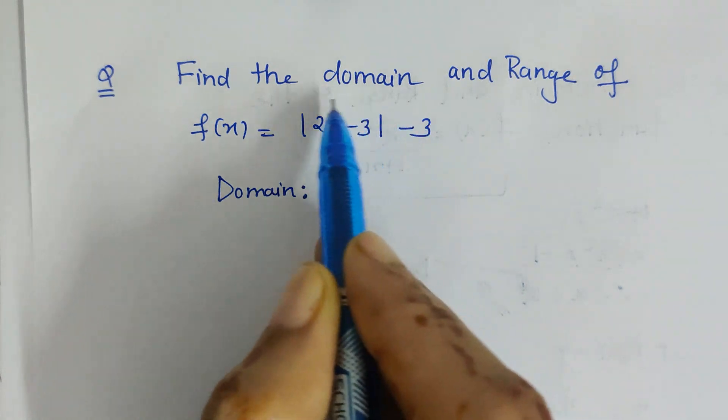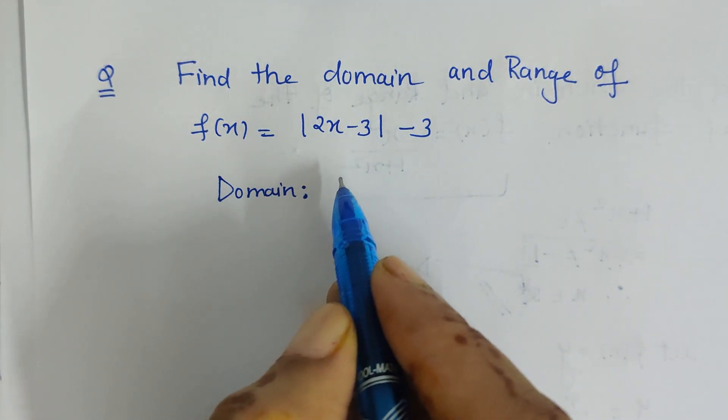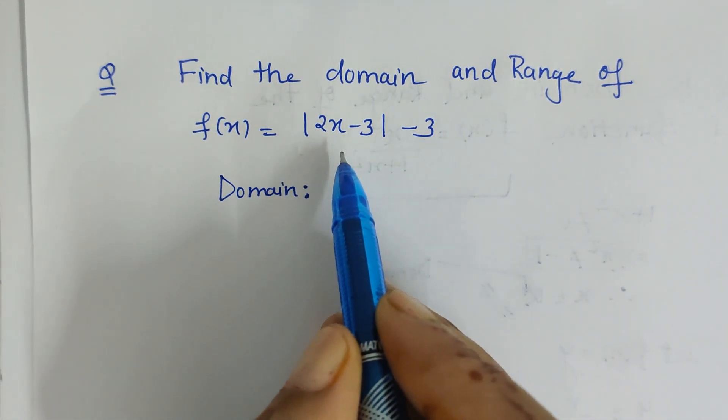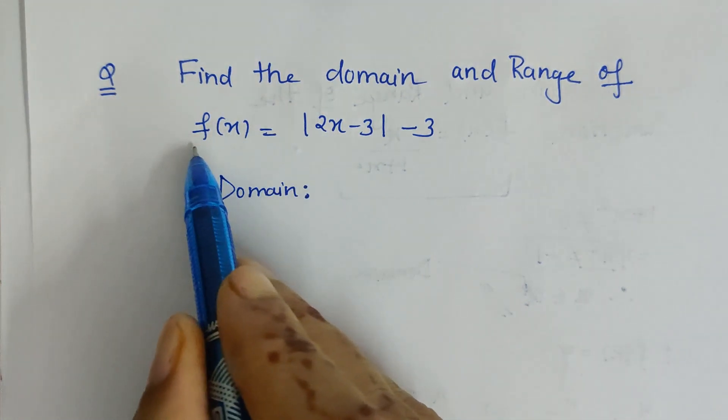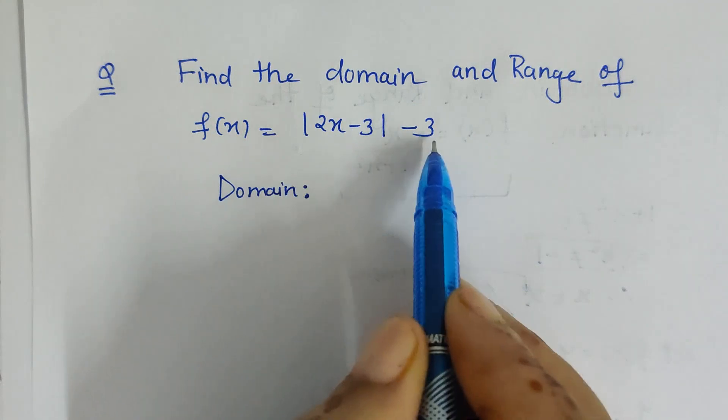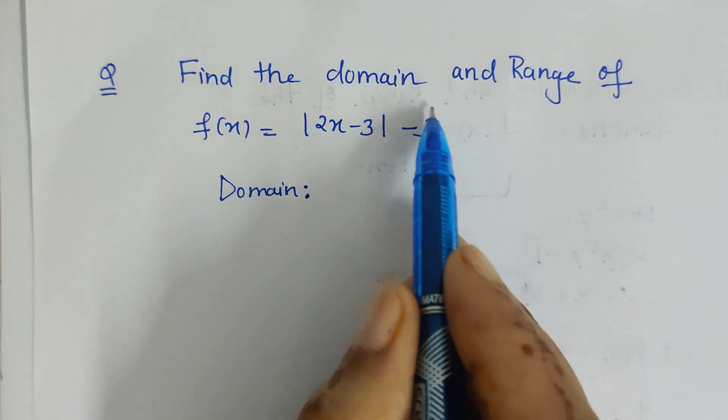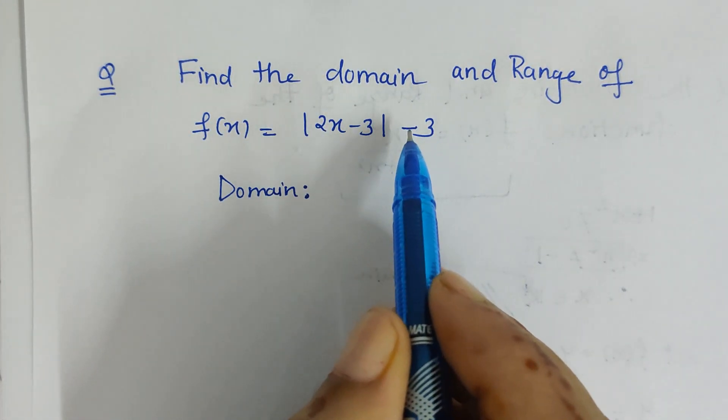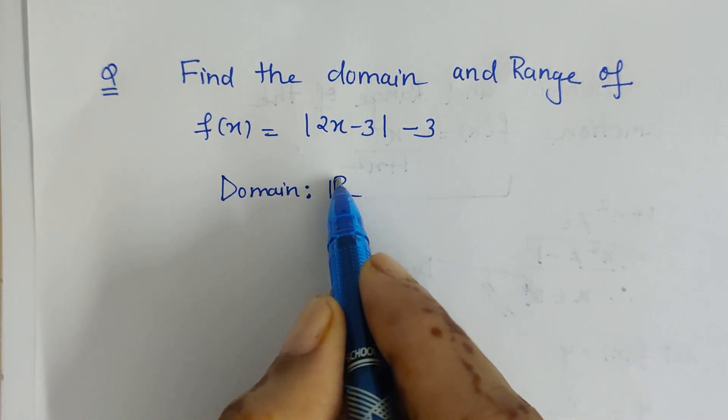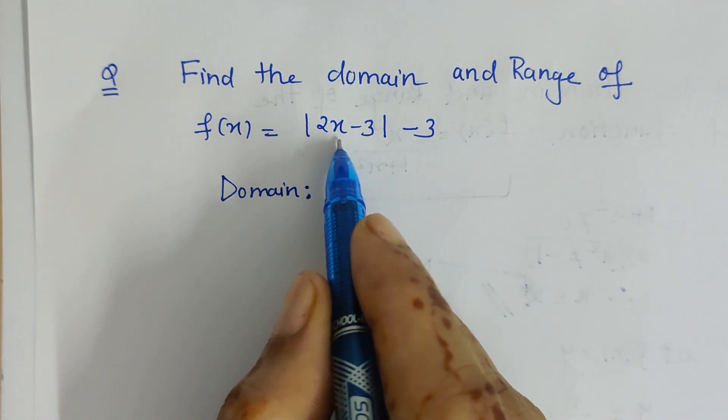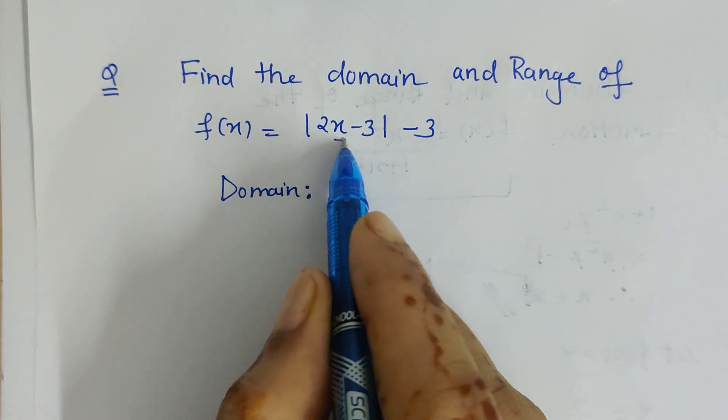So what does it show? It shows that there does not exist any value for x for which the function given by this is not defined. That means it can always be calculated, so all real numbers is the domain. That means we can put any value for x.